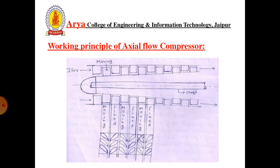The air enters axially from the right into the inlet guide vane, from where it is deflected by a certain angle to impinge on the first row of rotating blades with the proper angle of attack. Kinetic energy is added to the air by rotating blades, causing a slight pressure rise. The air is discharged at a proper angle to the first row of stator blades, where the pressure is further increased by diffusion. The air is then directed to the second row of moving blades, and the same process is repeated for remaining stages.